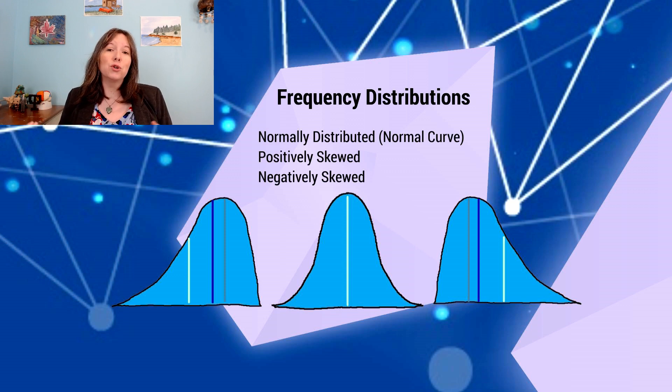So when we look at these images, the curve on the left has a tail pointing left or towards the negative end of a number line. And that is a negatively skewed curve. In a negatively skewed curve, what we find is the mean, the light colored vertical line, has pulled towards the tail. The mean always pulls towards the tail or towards the influential scores.